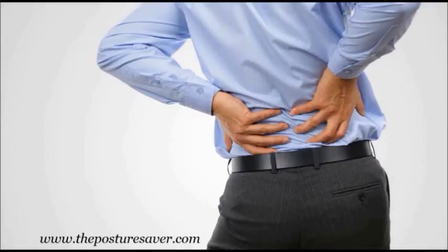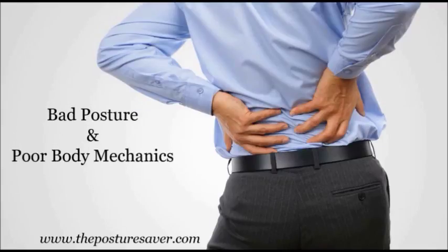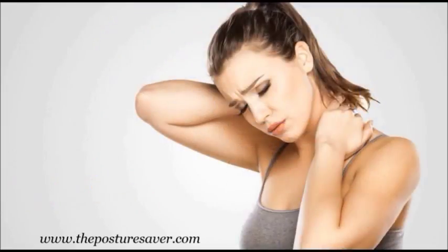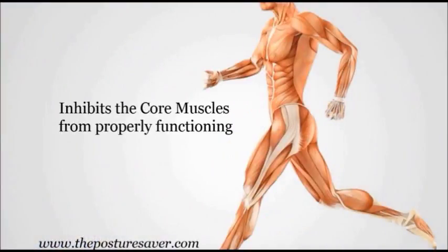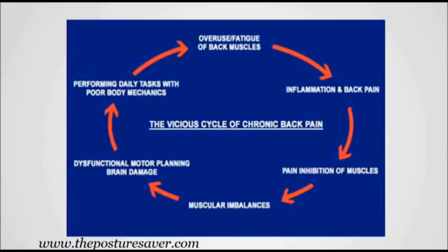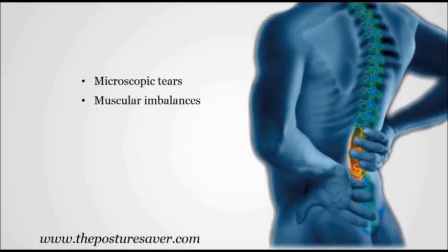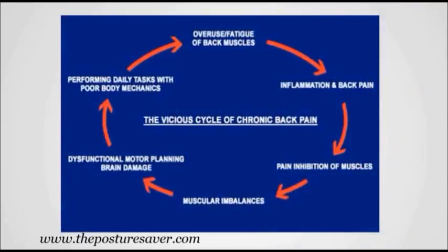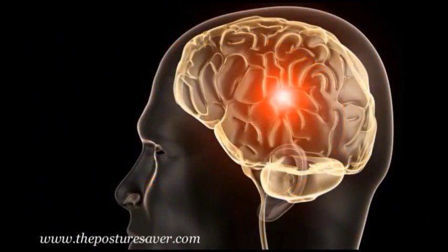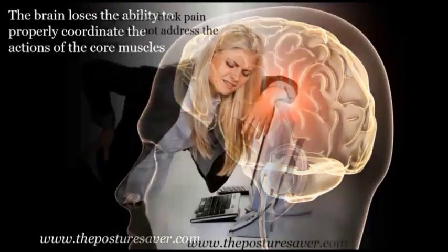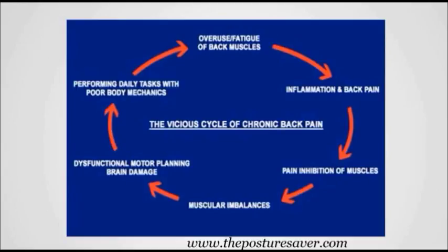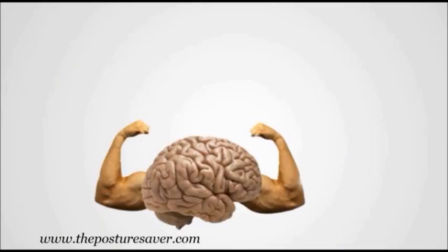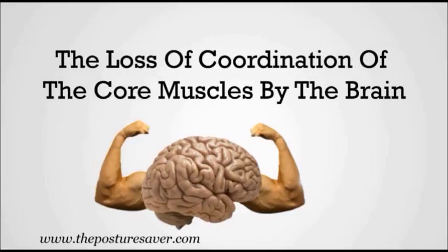It all begins with performing daily activities with bad posture and poor body mechanics — commonly referred to as slouching. As this is repeated, it causes the body's core muscles to fatigue prematurely, and inflammation and back pain ensue. This inhibits the core muscles from properly functioning. As a result, the back muscles experience microscopic tears, muscular imbalances, and even brain damage such as shrinkage of parts of the brain. The brain ultimately loses the ability to properly coordinate the actions of the core muscles. The vicious cycle of back pain can only be broken by dealing with the actual cause — the loss of coordination of the core muscles by the brain.